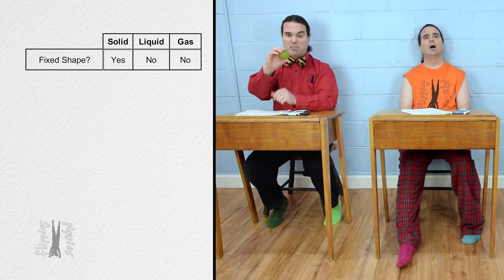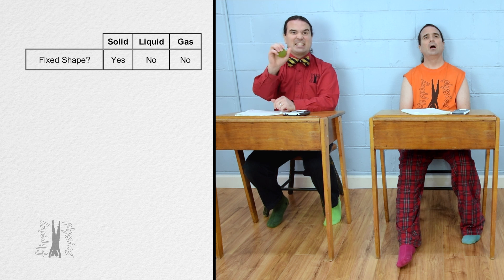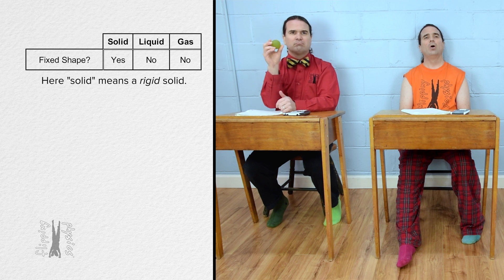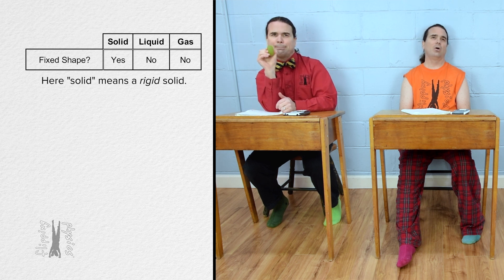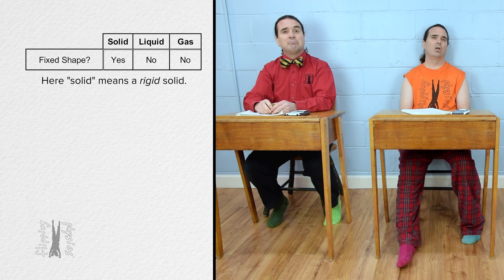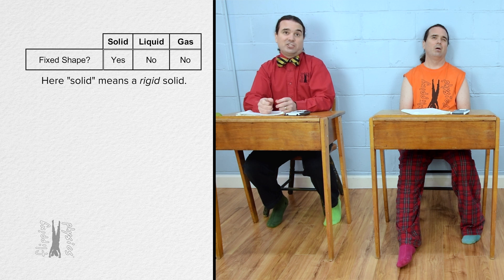But I can change the shape of this rubber ball by squeezing it. So, is this rubber ball a solid or a liquid? Okay, so we are talking about the most basic principles of these three states of matter. So, when we say solid, what we really mean is a rigid solid. Most solids do have some elasticity, meaning they can be deformed slightly, however, they return back to their original shape. At this point, we are assuming all solids are rigid and do not change shape.